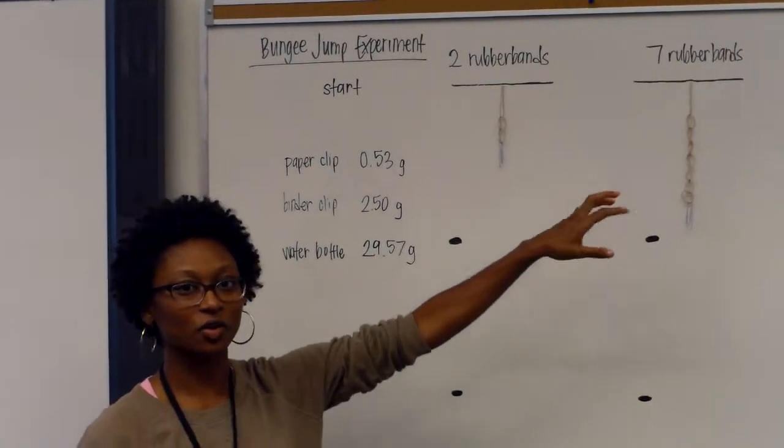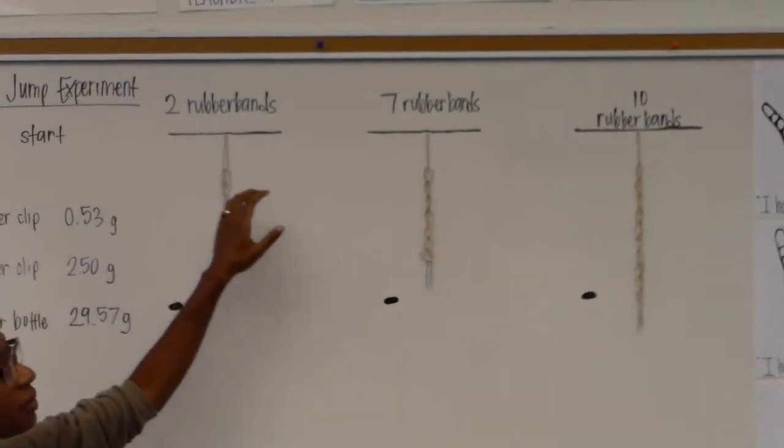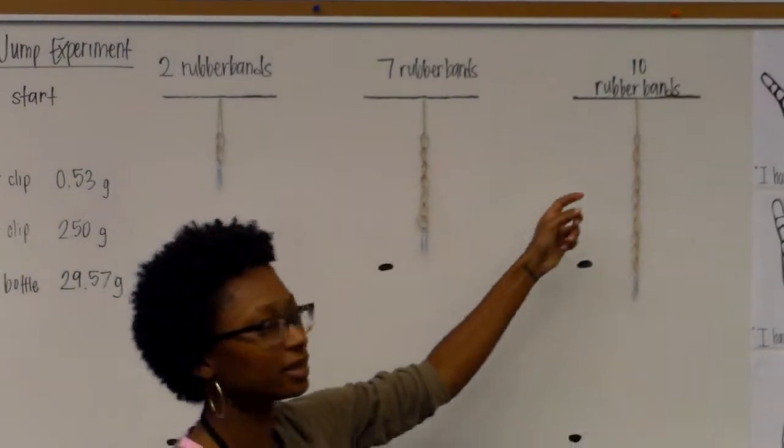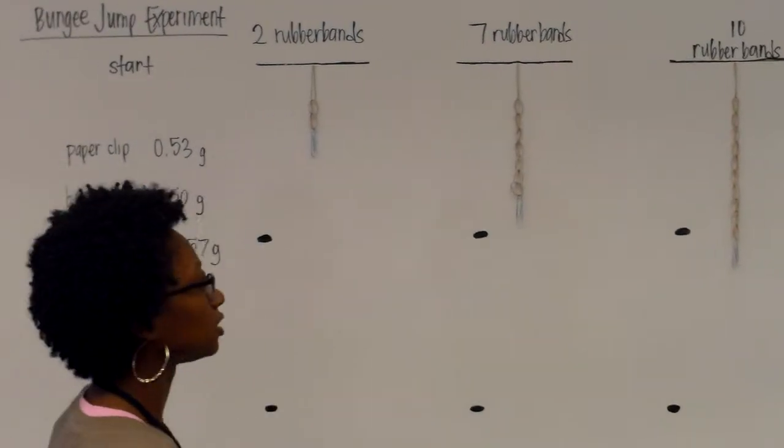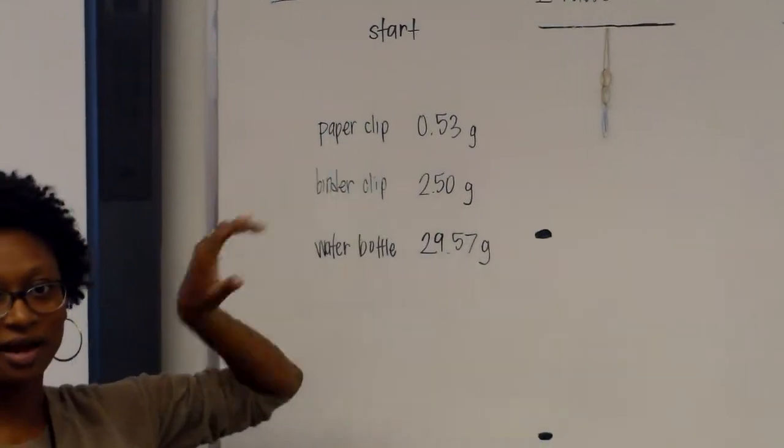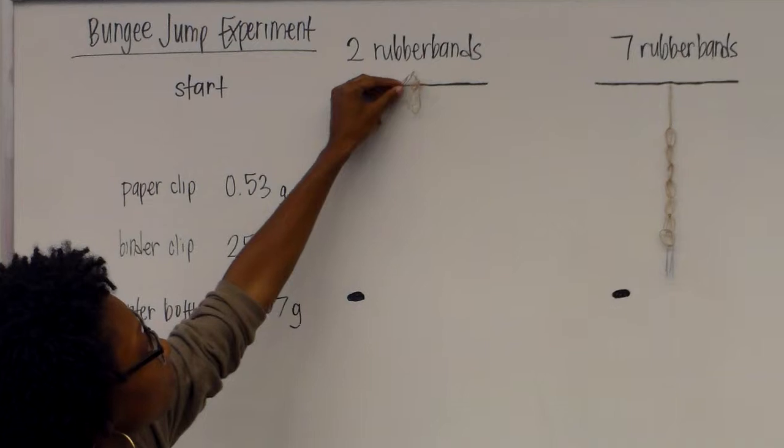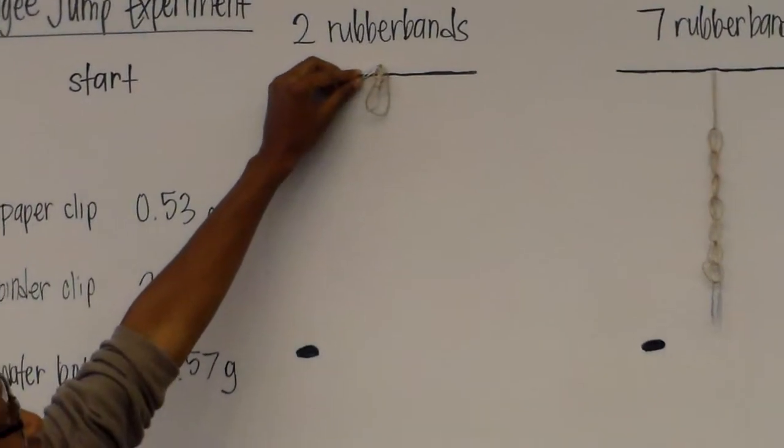This one has two rubber bands, seven rubber bands, and then ten rubber bands. I'm also going to be putting on three different weights. The first weight is a paper clip, which is about 0.5 grams. So starting from this line up here, I'm going to just drop it.